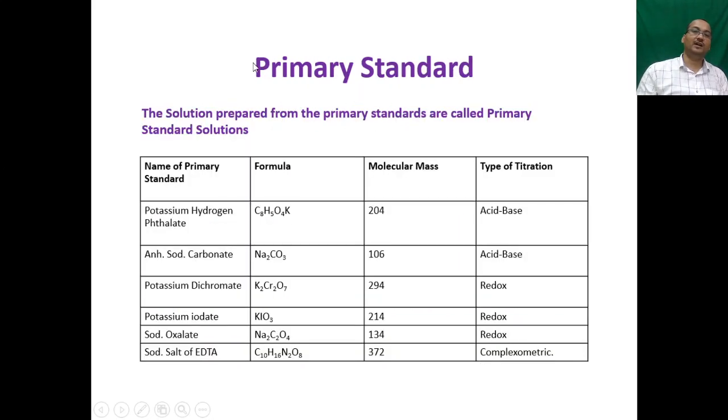Now we will look at the examples of primary standard: potassium hydrogen phthalate, anhydrous sodium carbonate, potassium dichromate, potassium iodate, sodium oxalate, sodium salt of EDTA. They are used for different purposes. For example, anhydrous sodium carbonate is used for acid-base titration. Similarly, potassium dichromate is used for redox titration. Sodium salt of EDTA is used for complexometric titration.